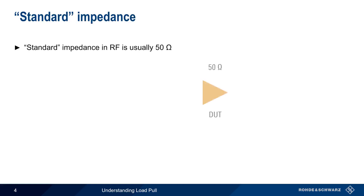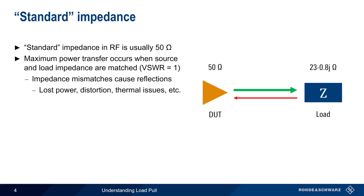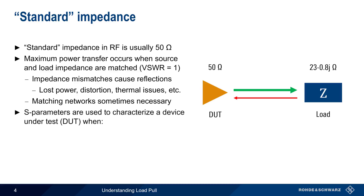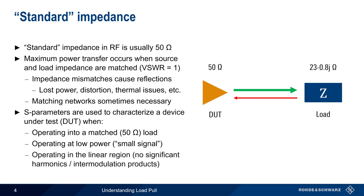In the radio frequency world, the standard load impedance is usually 50 ohms. Maximum power transfer occurs when the source and load impedances are matched. Impedance mismatches cause reflections, and are generally undesirable because they can reduce transfer power, create distortion and thermal issues, etc. So-called matching networks are therefore necessary in some cases. S-Parameters can be used to characterize the device under test, but these parameters are only useful when the DUT is being operated into a matched load, or under small signal conditions, where the DUT is operating in its linear region with no significant harmonics or intermodulation products.